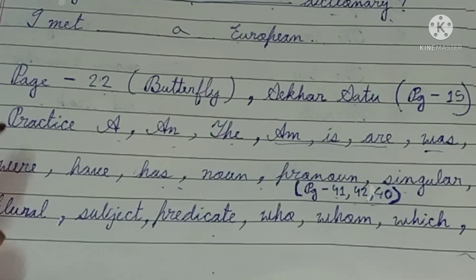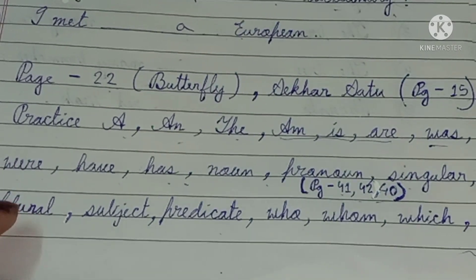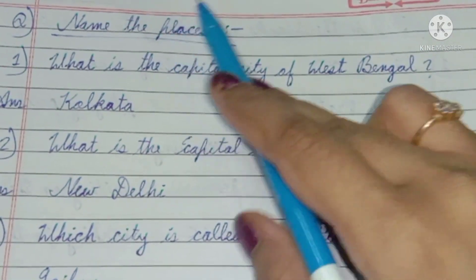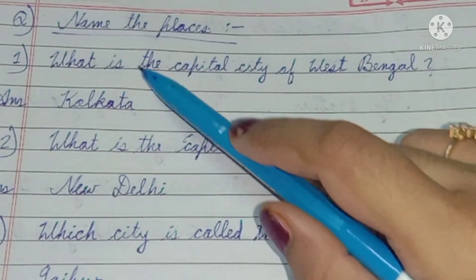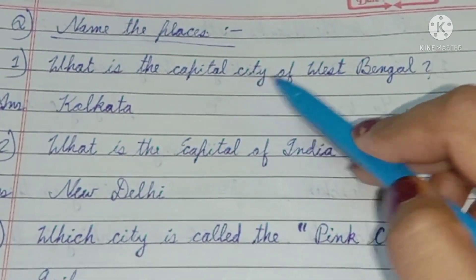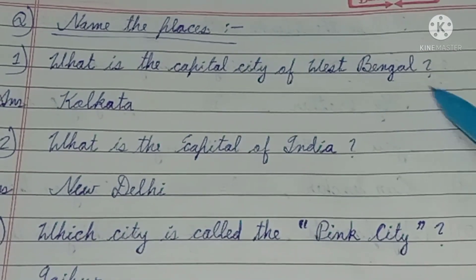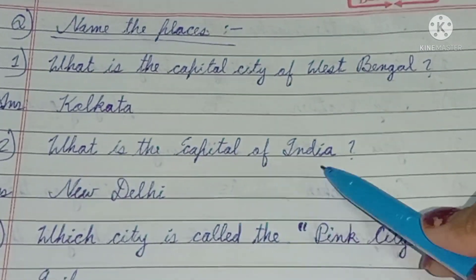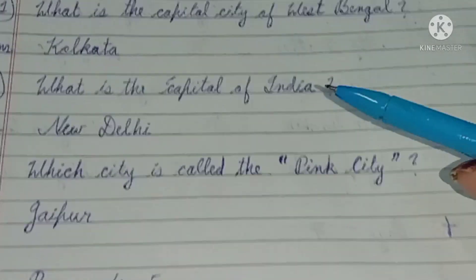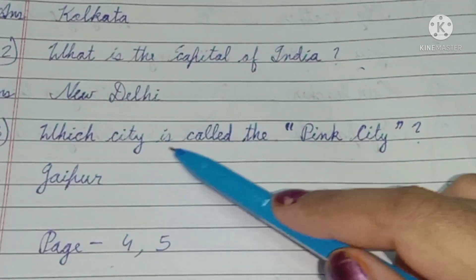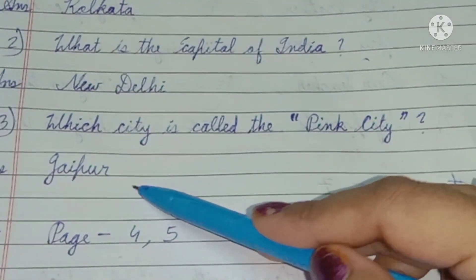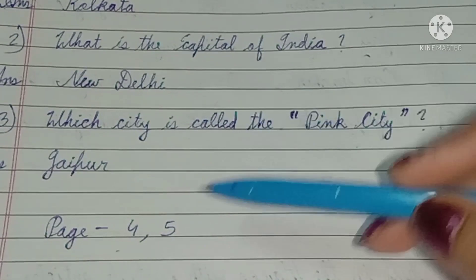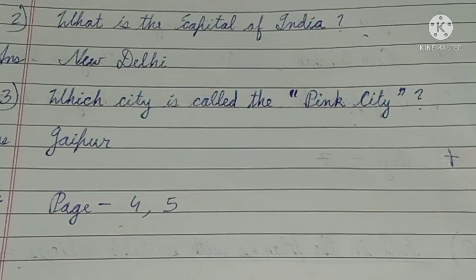This is a very good practice. What is the name of the places? What is the capital city of West Bengal? West Bengal — Kolkata. What is the capital of India? Delhi. Which city is called the Pink City? Jaipur.